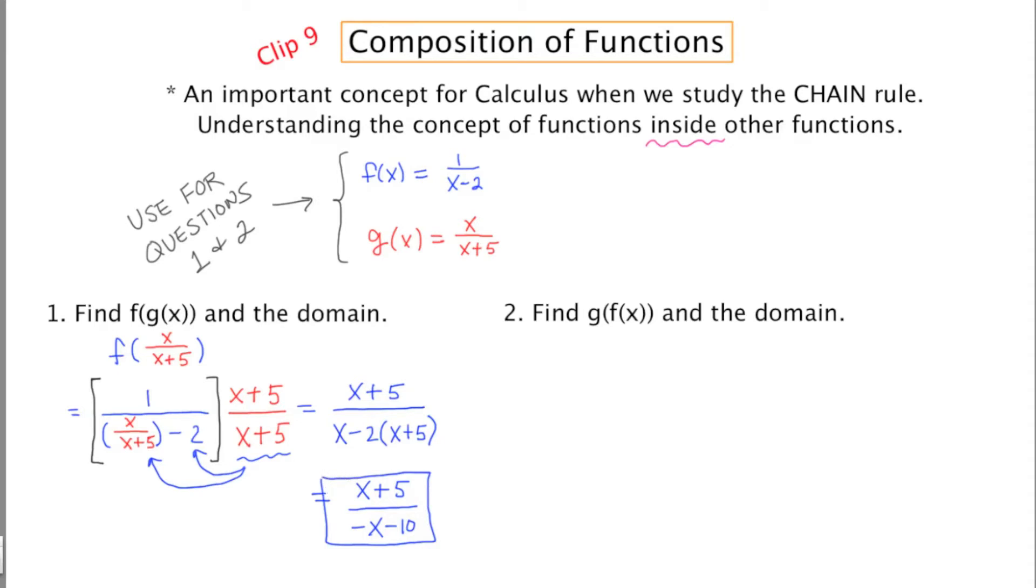Now it also asks us to find the domain. And finding the domain of a composition requires knowing what the domain of the inside function is, and also the domain of the result, and seeing where they intersect. So for this type of problem, we have to look at the inner function. The inner function is this guy here in red, and this guy could be anything except for negative 5. Negative 5 would produce a zero in the denominator. Now if we look at the result, x can be anything except for negative 10.